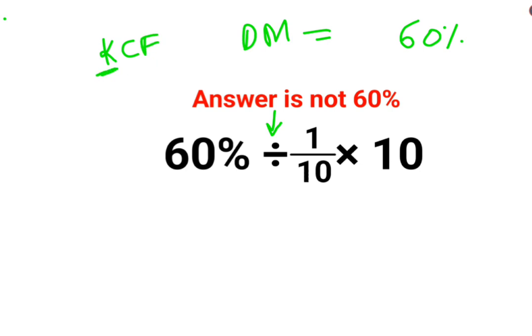Where K stands for keeping the first number as it is. C stands for changing the division sign to multiplication. And F stands for flipping or taking reciprocal of 1 upon 10 which is 10 multiplied by 10.